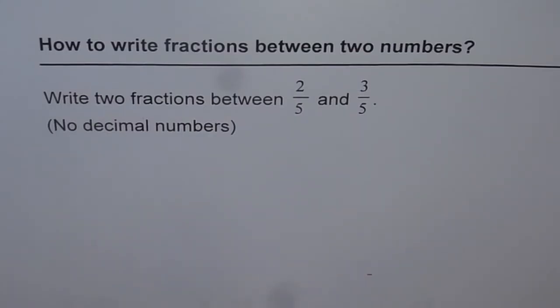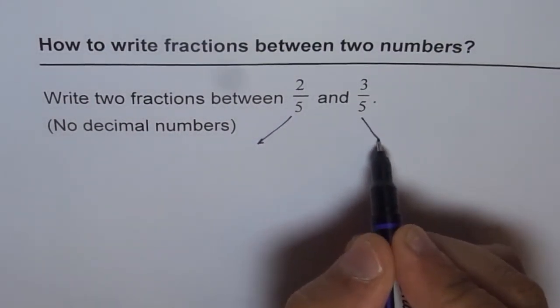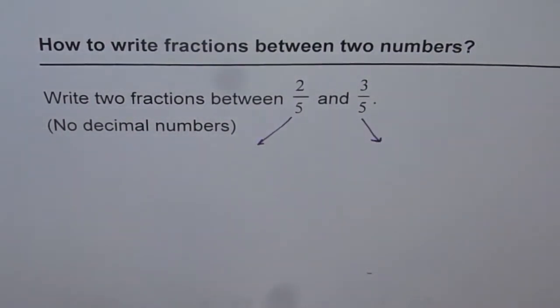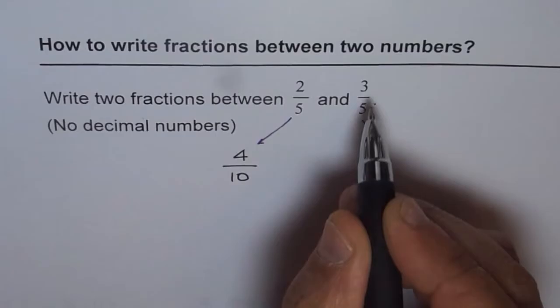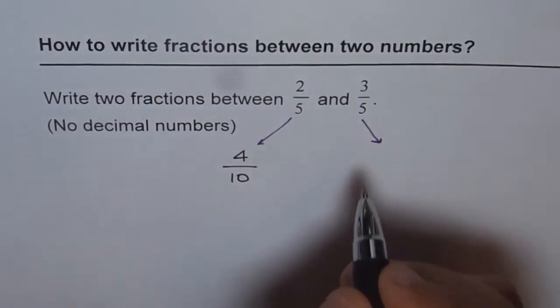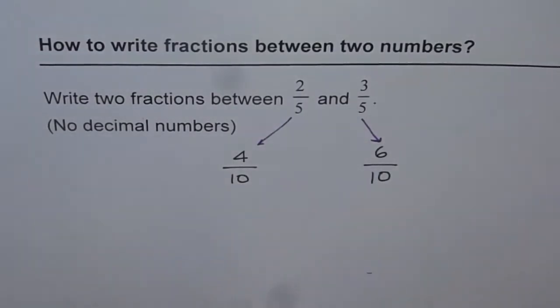We can do one thing. We can multiply both numerator and denominator by 2 and write down equivalent fractions and then see. If I multiply both numerator and denominator by 2, what do I get? I get 4 over 10 and 2 times 3 is 6. So I get 6 over 10. So what I did is I made equivalent fractions with higher denominator times 2.